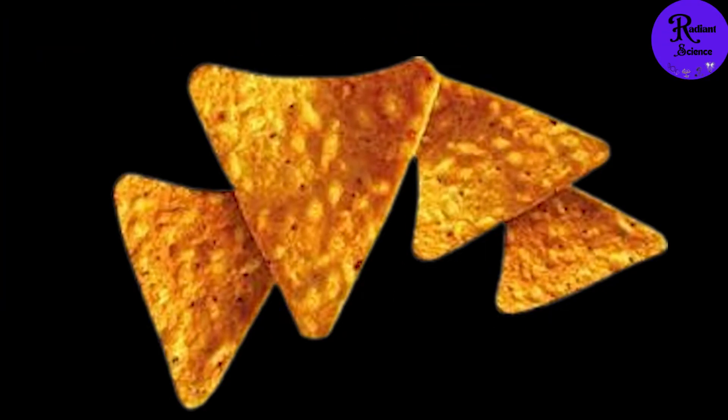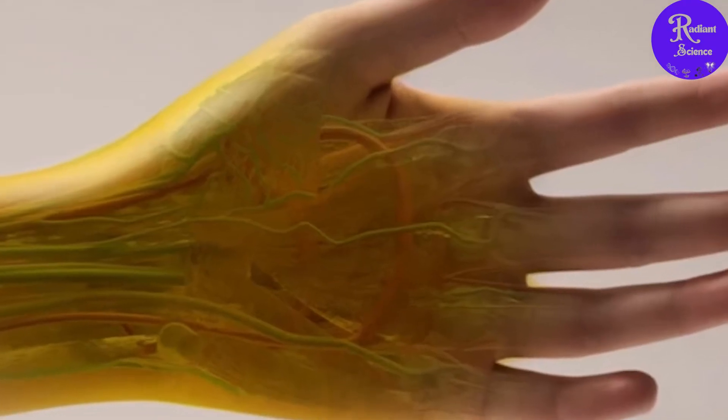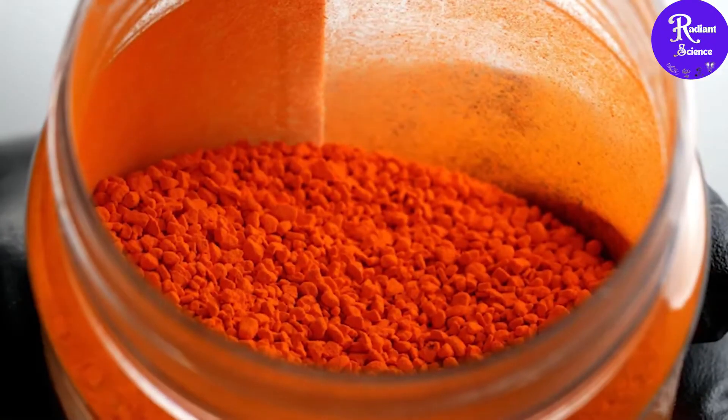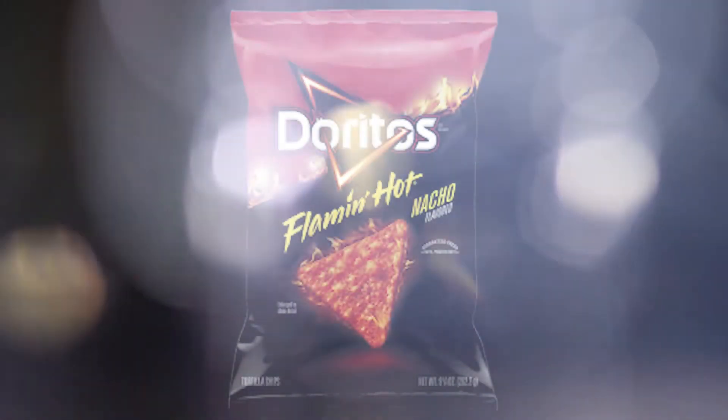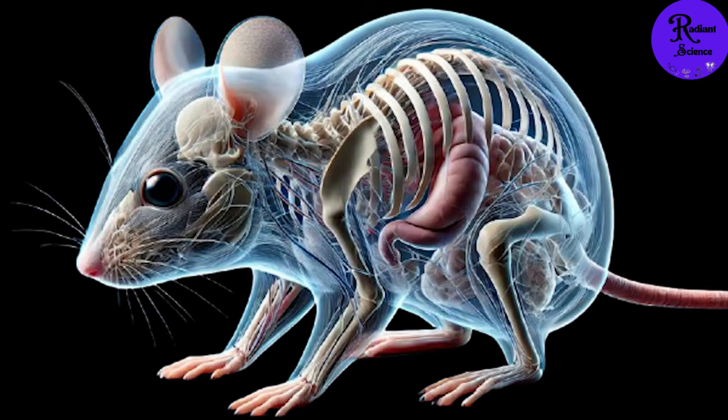Can you imagine if the same dye that gives your Doritos their orange color could help scientists see through living tissue? Believe it or not, researchers have discovered that a food dye commonly found in snacks, like Doritos, can turn mouse skin transparent, offering a groundbreaking way to peer inside live animals.